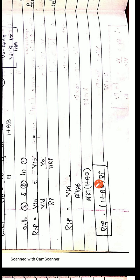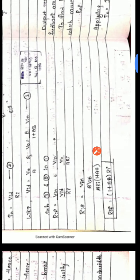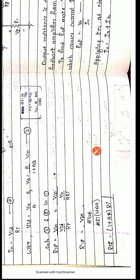Here A and A cancel, and VIN and VIN cancel, so RIF = (1 + Aβ)·RI. From this we can conclude that the input resistance with feedback is increased by the factor (1 + Aβ) compared to RI.